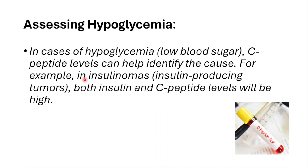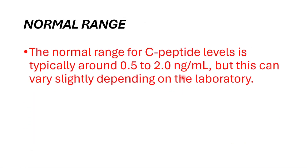Another use is assessing hypoglycemia — low blood sugar. C-peptide levels can help identify the cause. For example, in insulinoma, which is an insulin-producing tumor, both insulin and C-peptide levels would be high.